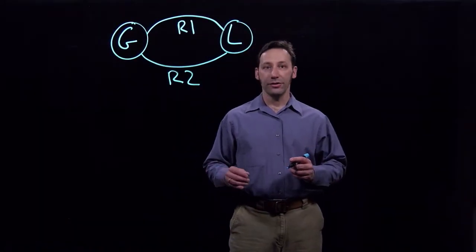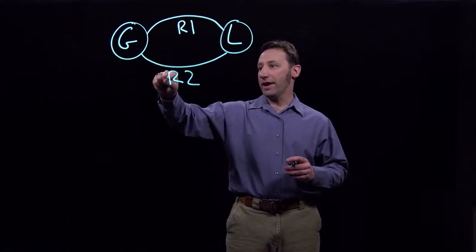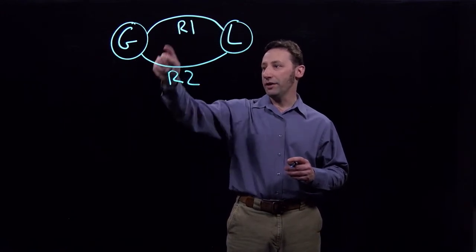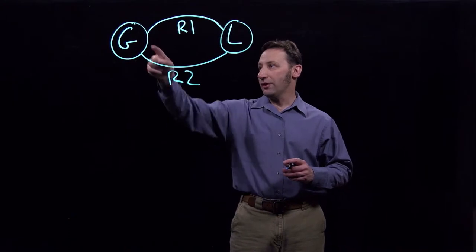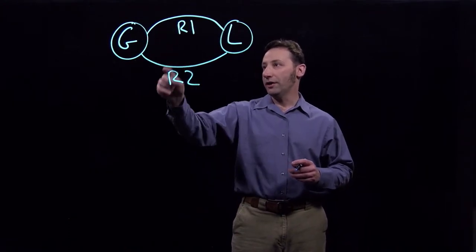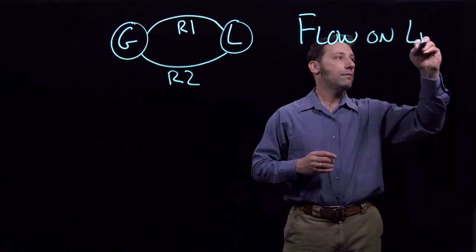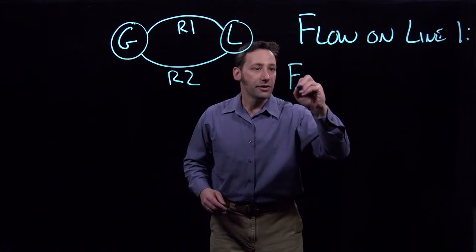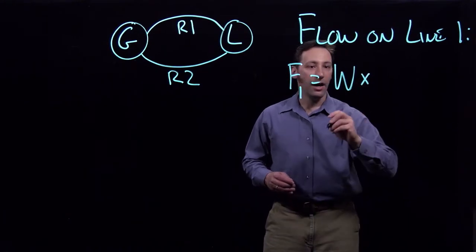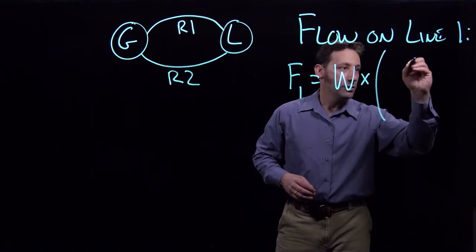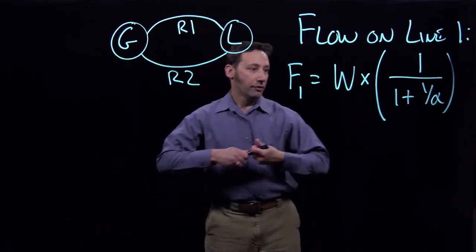To use the distribution factors to calculate power flows, we realize that the distribution factors simply tell us the proportion of power that's going to flow on each of these two lines. The total amount flowing on each line is the amount produced at the generator times the distribution factor on each line. So the flow on line one is going to be equal to the power produced at the generator times the distribution factor on line one, which is one over one plus one over alpha.